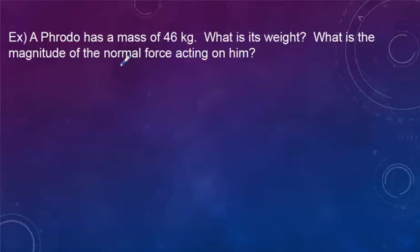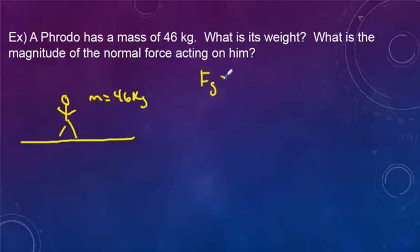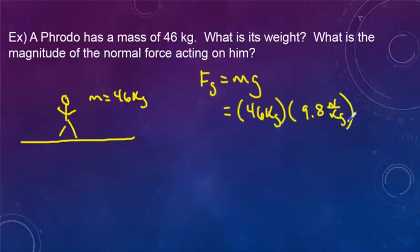So let's do a little example here. Frodo is standing on a level surface. He has a mass of 46 kilograms, and we want to know what his weight is. So F_g equals m times g. So we have the mass of 46 kilograms times the gravitational field strength of 9.8 newtons per kilogram. If we calculate these, we get 451 newtons.